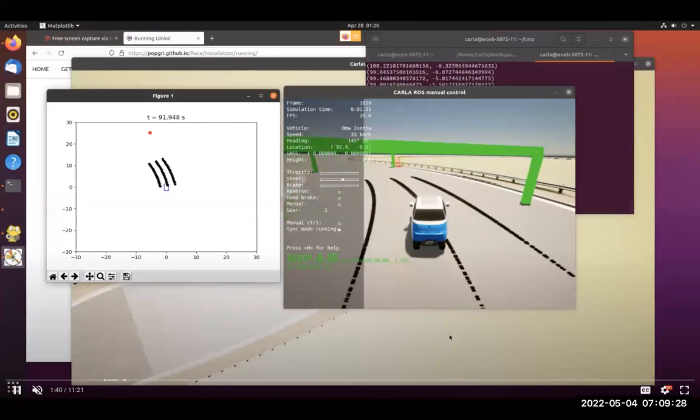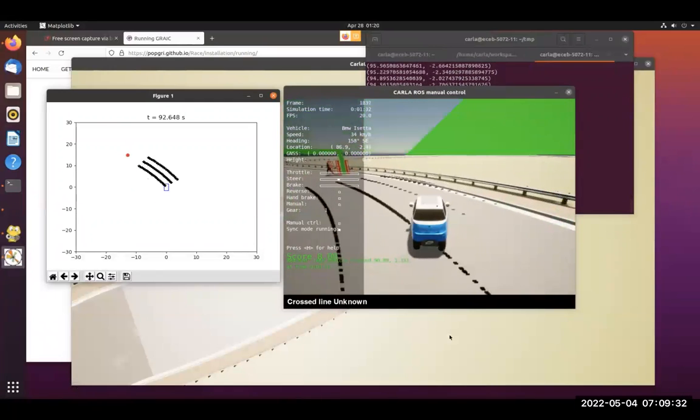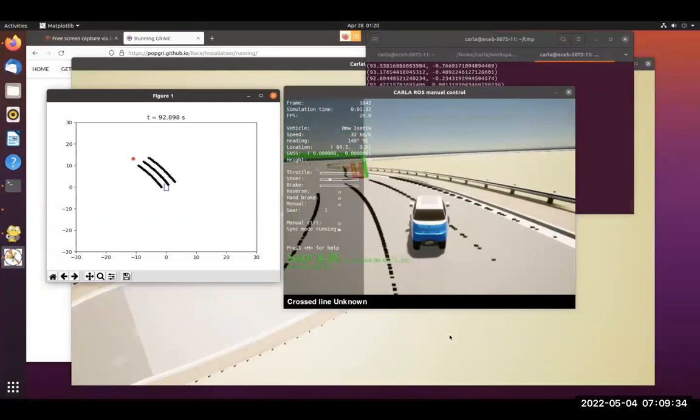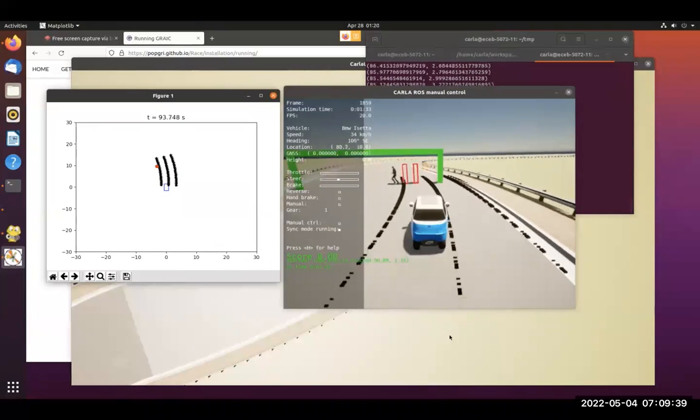So for this first video, the baseline vehicle recognizes the pedestrian as in front of the vehicle rather than being on the right lane, since it does not consider the curvature of the road. The vehicle decides to cross to the right lane as a result.